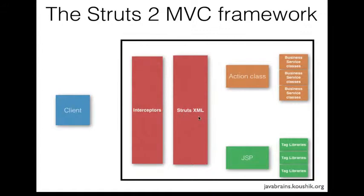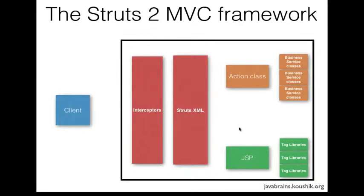One is the struts.xml and the interceptors. We have action classes and we have JSPs that use tag libraries, and of course action classes call certain business service methods to do the actual work. This is an overall high-level picture of a STRUTS2 MVC web application, but since we're developing a small bare-bones STRUTS2 application in this tutorial, we're going to stick to the essentials. We'll try to remove some of the elements initially and learn what they are, then add them later.